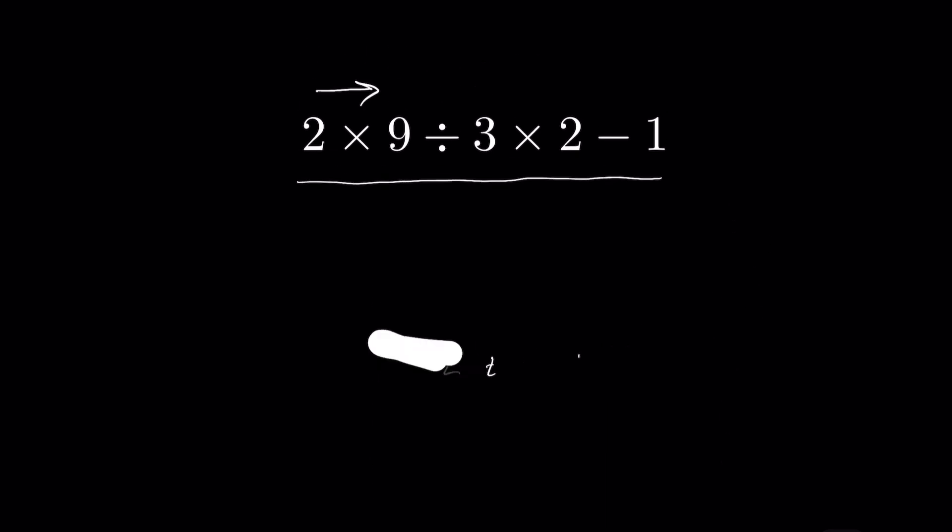9 times 2 is 18 divided by 3 times 2 minus 1. So 18 upon 3 multiplied by 2 minus 1. So 6 multiplied by 2 minus 1, and this is 12. 6 times 2 is 12 minus 1. So correct answer is 11.